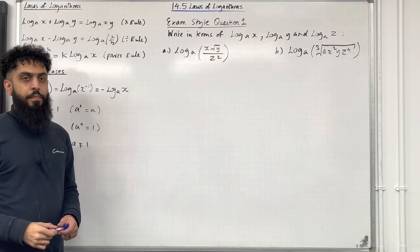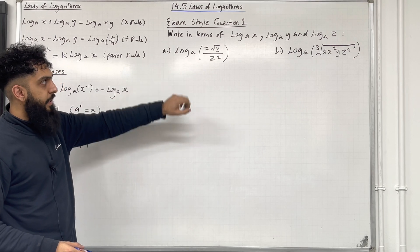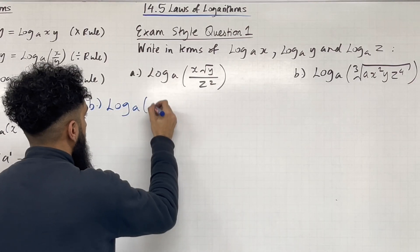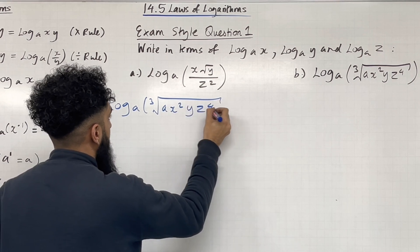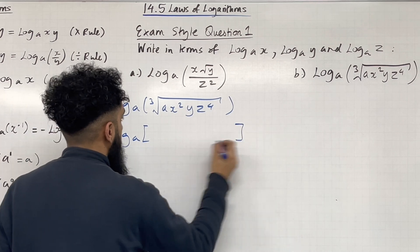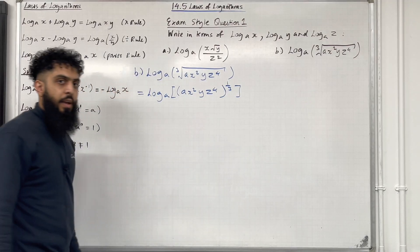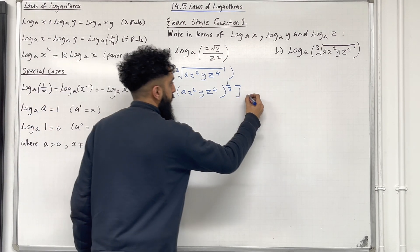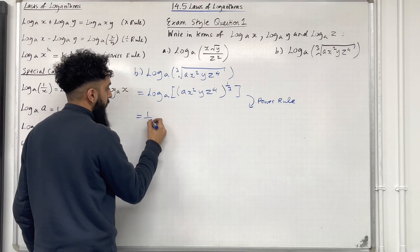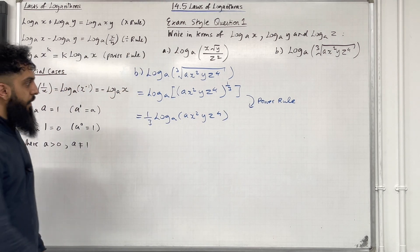Moving on to part B of exam style question 1. In part B, we want to rewrite log base A of the cube root of ax squared y z to the power of 4 in terms of log base A of x, log base A of y and log base A of z. We've got log base A of the cube root of ax squared y z to the power of 4. Firstly, I can rewrite this as log base A of ax squared y z to the power of 4, all to the power of one third. I can bring down the power of one third using the power rule.